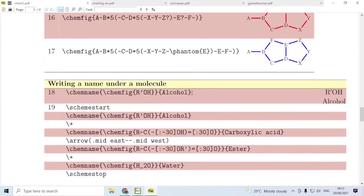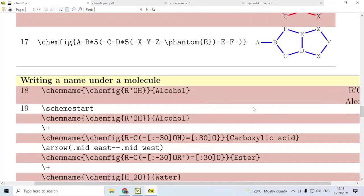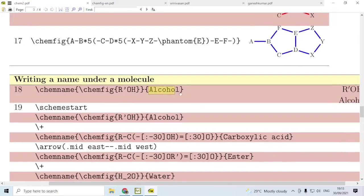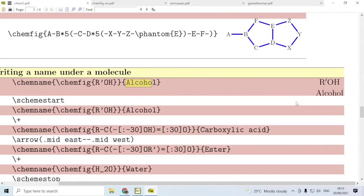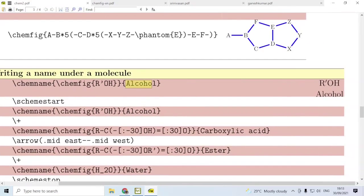In many cases we would like to write the name of the molecule just below the structural formula. In that case we use the command \chemname followed by two pairs of curly braces. Within the first pair we give the ChemFig structure, and then the second pair of braces we give the name of that structure. Here we have the first chemical structure and underneath we have the name of that compound.